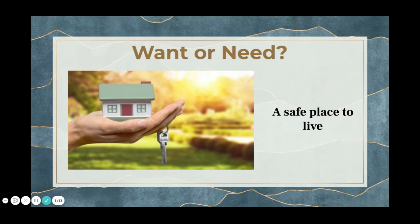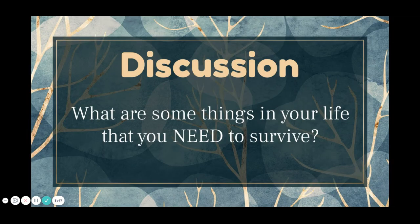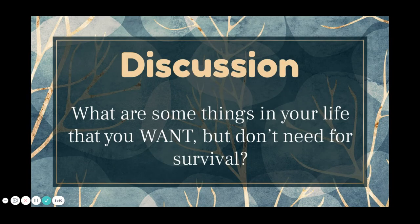What about a safe place to live? That is a need — you have to have shelter to live. You don't need a mansion; you just need a safe place to live. What about water? We need that to live. What are some things you need to survive, and what are some things you want but don't need? Send me an email.